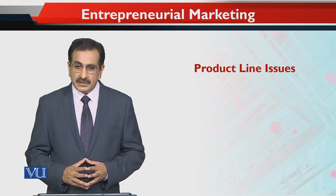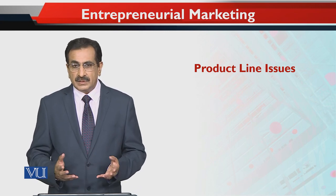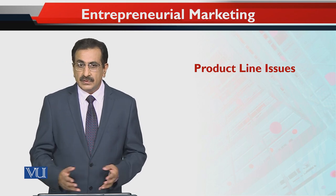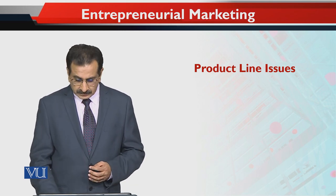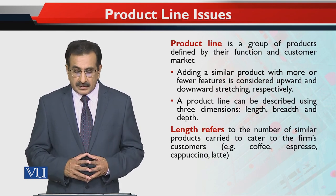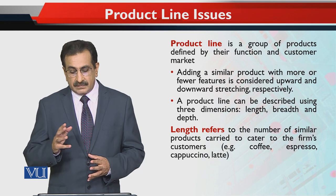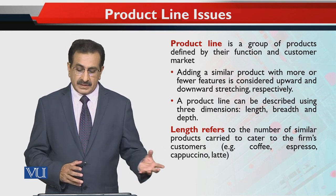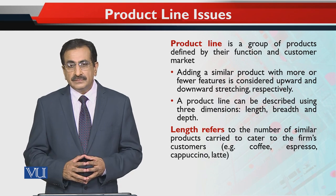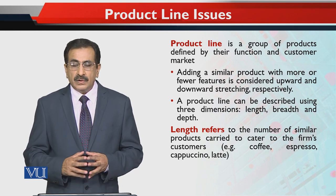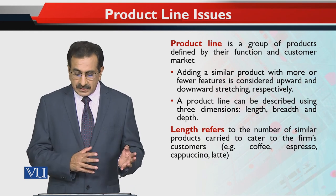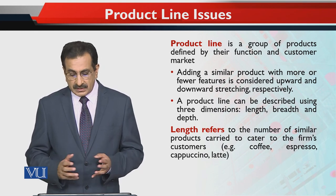Product line is a group of products defined by their function and customer market. Adding a similar product with more or fewer features is considered upward and downward stretching respectively. These are related but different issues which are important for the knowledge of an entrepreneur.